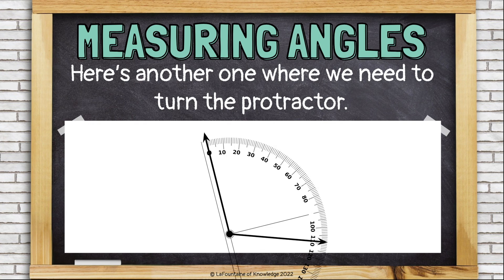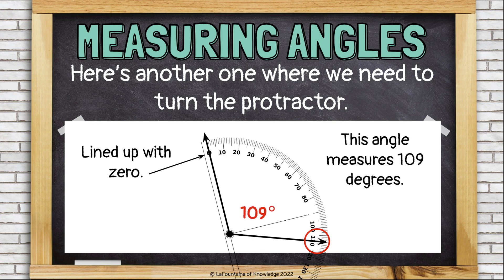Line one ray up with zero. And look at where the other ray points. For this angle, 109 degrees. It's an obtuse angle.